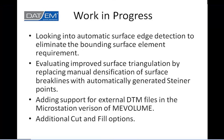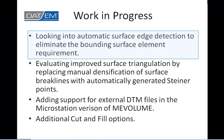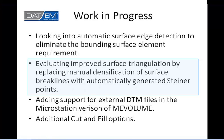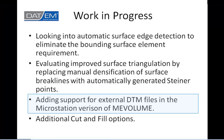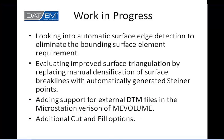What we're working toward for future releases: we're looking into automated surface edge detection to eliminate the requirement for the bounding surface element. We're also evaluating improved triangulation by replacing manual densification surface parameters with automatically generated Steiner points. We're adding support for external DTM files in the MicroStation version of ME Volume — that's currently available in the AutoCAD version — and we're looking at additional options like cut and fill.